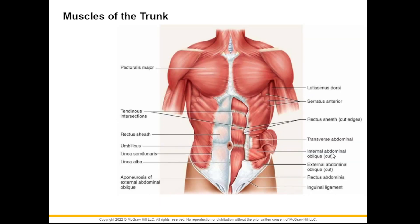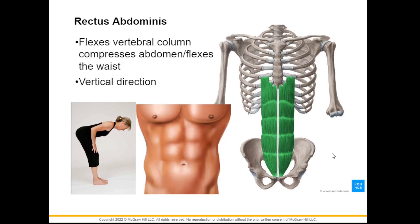Next are the muscles of the trunk, starting with the rectus abdominis. This is a very long muscle right in the middle of the abdomen and it allows us to flex our vertebral column and to compress our abdomen. In order for you to see your six-pack abs, this is the muscle responsible.